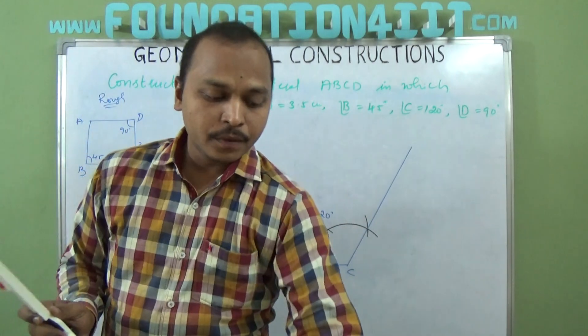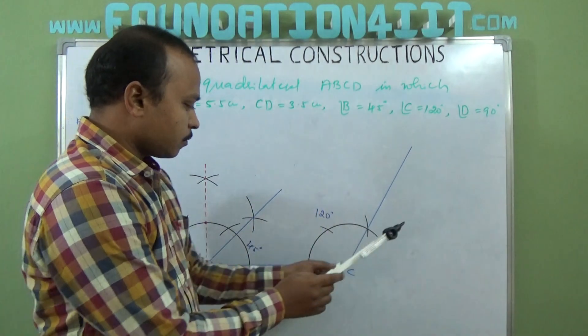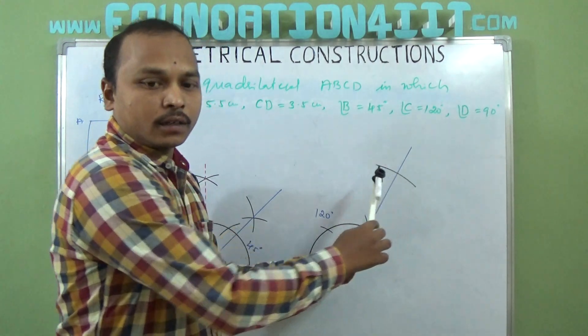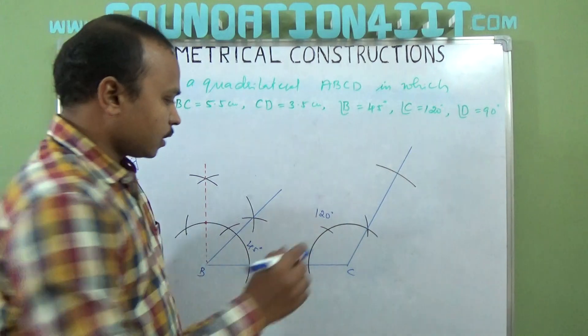Using the scale, taking 3.5 centimeters from C, cut this arc. So where it touches, that is D.